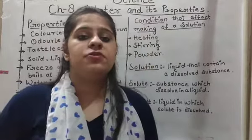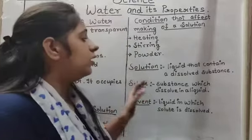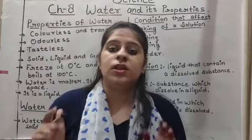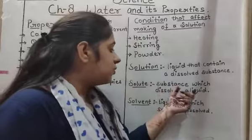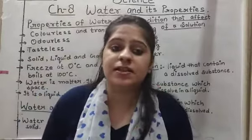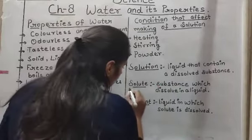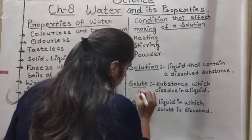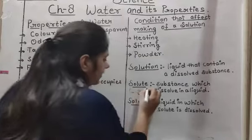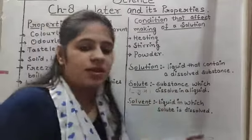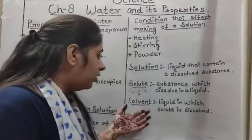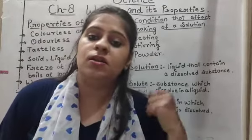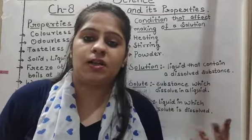There are some important terms you should know. What is a solution? A solution is a liquid that contains a dissolved substance. A solute is the substance that dissolves — for example, sugar and salt are solutes. A solvent is the liquid in which the solute is dissolved — for example, water is a solvent.